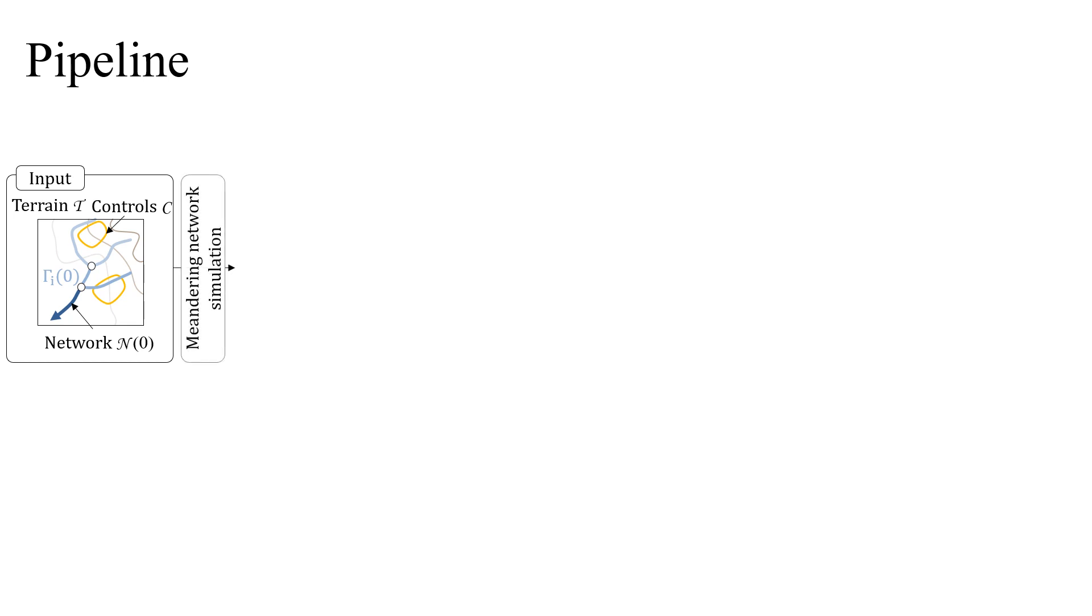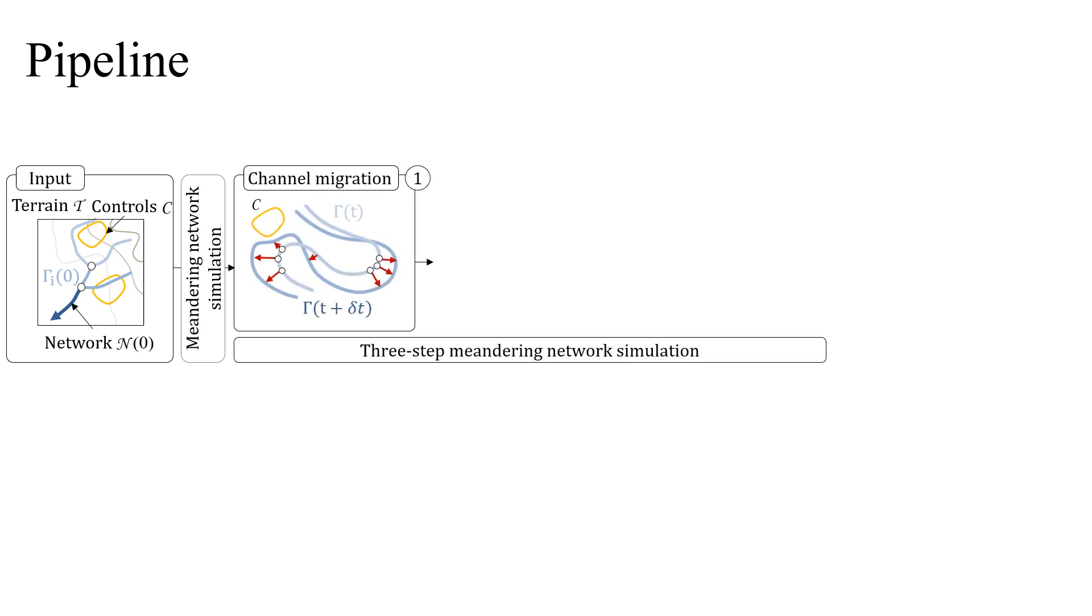We start from an existing elevation terrain and an initial river network, automatically computed or provided by the user. A simulation step proceeds as follows. First, we compute channel migration on each channel independently as a function of local and upstream curvature. We then simulate abrupt events such as cutoffs and avulsions, which can drastically change the paths of the different channels.